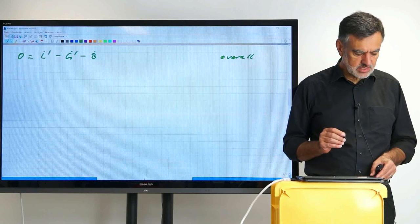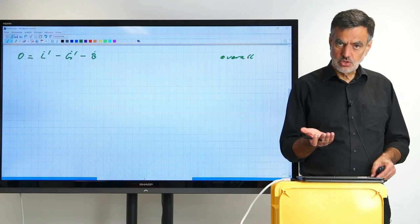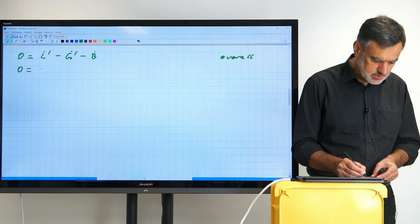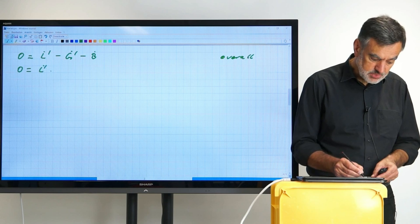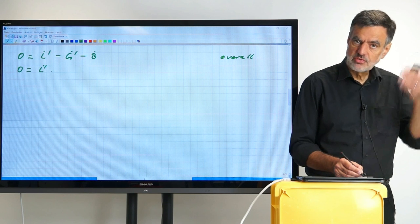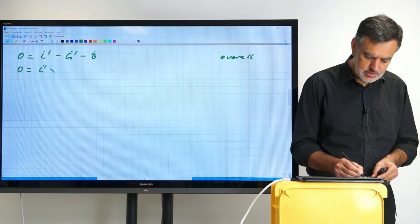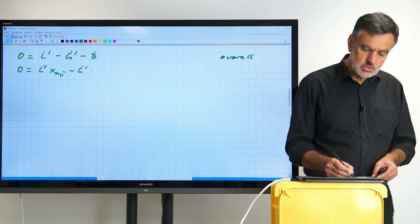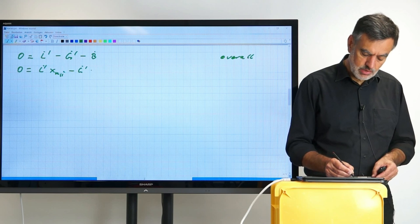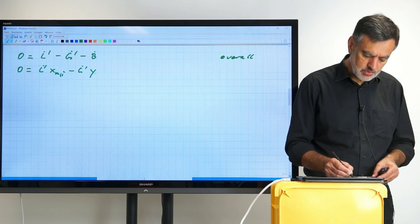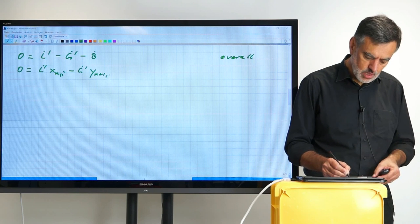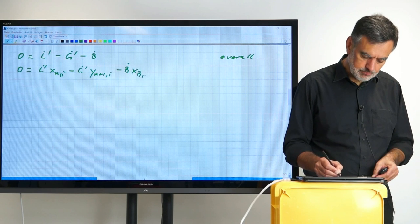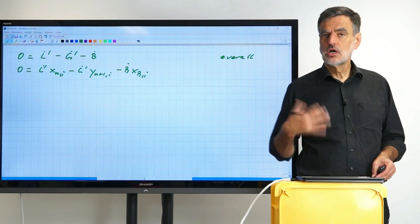The second balance we want to set up is for an individual component i. Again, steady state also for each individual component. So zero equals L dot prime times the corresponding composition X_Ni minus the G dot prime. The composition is Y_N+1,i, from stage number n plus 1, minus the B dot times the X_Bi. And that is the balance for component i.